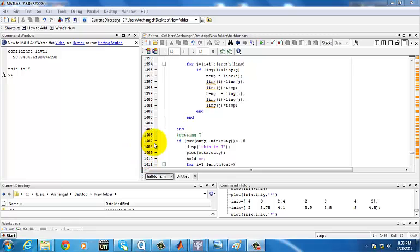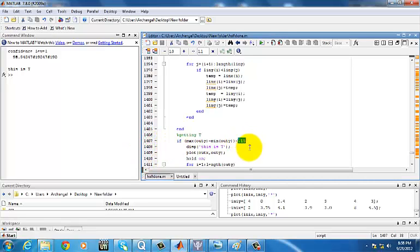In row 1407, the value 0.15 is related to the slope of the top line of t. This value can be increased to allow t to have a higher slope.